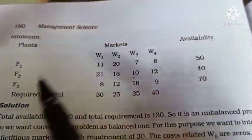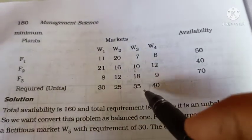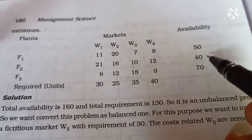The total requirements are 30, 25, 35, 40. The availability is 50, 40, 70.